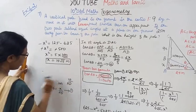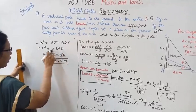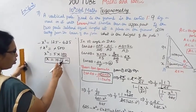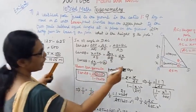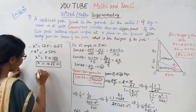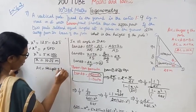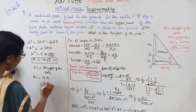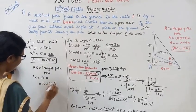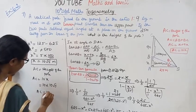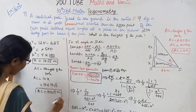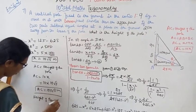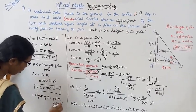Since x squared equals 500, and minus minus cancels, x squared equals 5 into 100. Taking the square root gives x equals 10 root 5 meters. AC equals 10x equals 10 into 10 root 5 equals 100 root 5 meters. Therefore, the height of the pole is 100 root 5 meters.